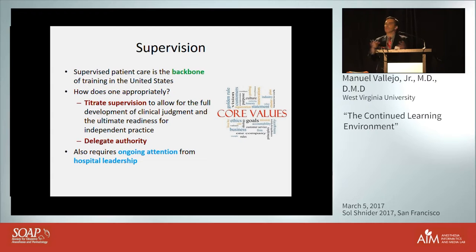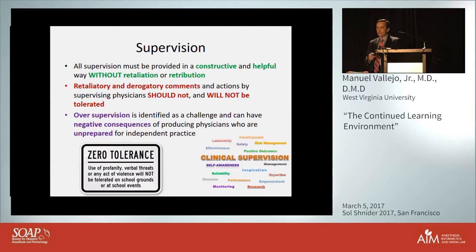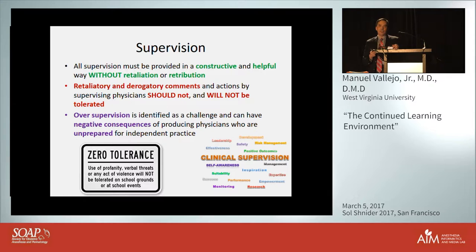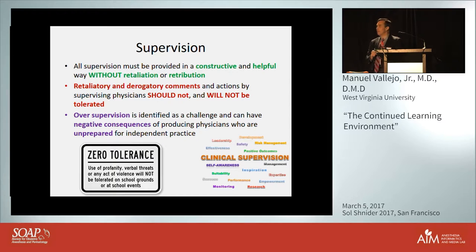Administration has to have a leadership role in how to appropriately delegate authority to trainees. There has to be a constructive and helpful way — supervision must be non-derogatory and non-retaliatory, and residents must be treated appropriately. On the other extreme, the ACGME also recognizes the problem of over-supervision. Constantly micromanaging a trainee is bad because it can have negative consequences — we don't want to graduate someone who is unprepared for independent practice.